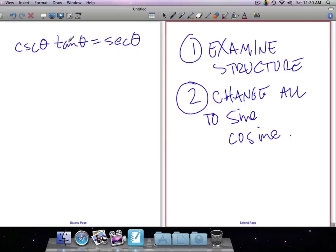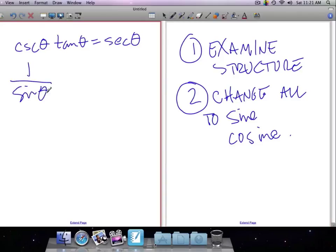Like for the instance, I'm not sure if I want to change that tangent yet. I probably will. So let's change cosecant into either sine or cosine. What's equivalent to cosecant? One over sine. What's equivalent to tangent? Well, sine over cosine. And what's equivalent to secant? One over cosine.